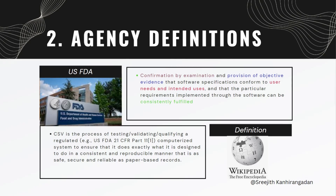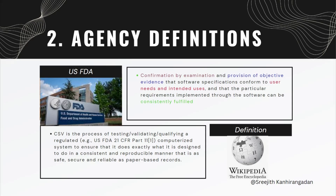Now that you understand what is computer system validation, it is time for goal number two, which is the agency's definition of computer system validation. The USFDA says: confirmation by examination and provision of objective evidence that software specification conforms to user needs and intended uses, and that the particular requirements implemented through the software can be consistently fulfilled. I know it's a lengthy definition, but I'm going to explain it in the next slide.